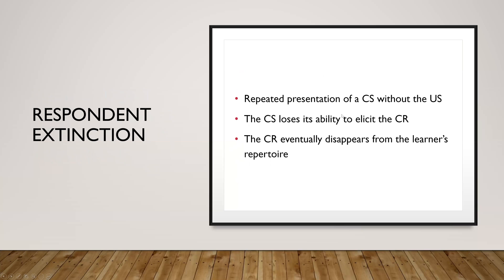Respondent extinction is the repeated presentation of a conditioned stimulus without the unconditioned stimulus. If we paired our pin with pepper, to put that on extinction we need to repeatedly present the pin without the pepper. Eventually that pin is going to lose its ability to elicit the sneeze. In the Jim and Dwight example, Jim needs to repeatedly present the computer sound without the Altoids — the sound will lose its ability to elicit the conditioned response. We know we've achieved extinction when the conditioned stimulus can no longer elicit the conditioned response. The unconditioned reflex doesn't disappear — pepper will still make you sneeze — but the pin will not. That's respondent extinction.